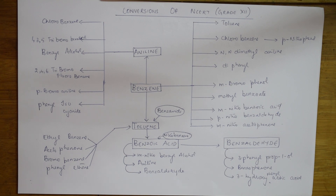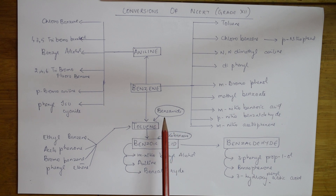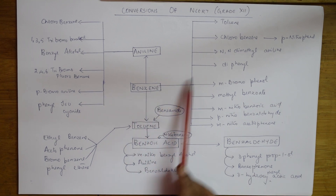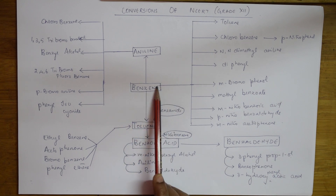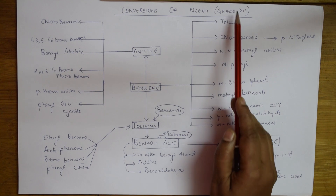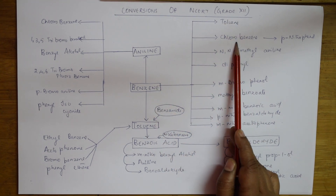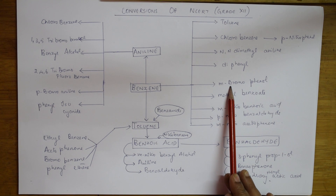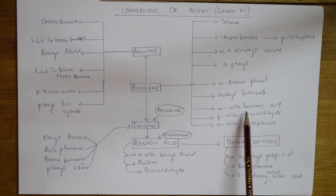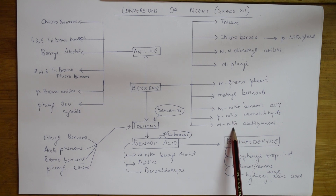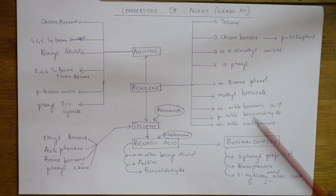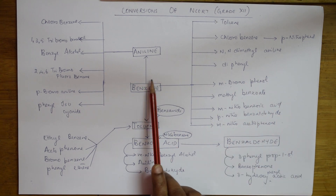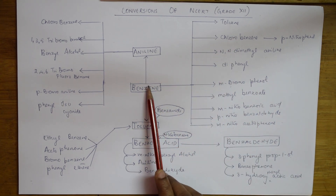For your Grade 12 syllabus, aromatic conversions start from benzene as the base compound. From benzene, they'll ask you to convert to toluene, chlorobenzene, para-nitrophenol, N,N-dimethylaniline, diphenyl, meta-bromophenol, methyl benzoate, meta-nitrobenzoic acid, para-nitrobenzoic acid, and meta-nitroacetophenol. These are the basic conversions spread across different parts of the textbook — I've clubbed them together to make it easier to teach.